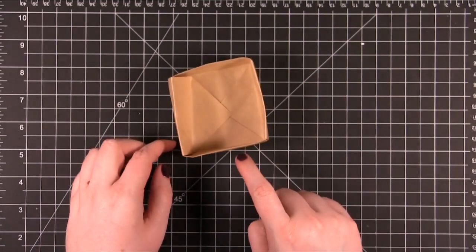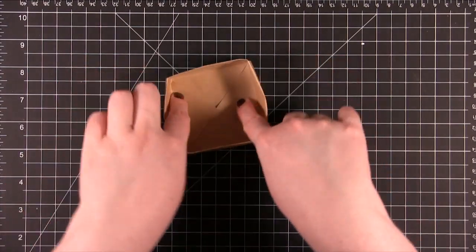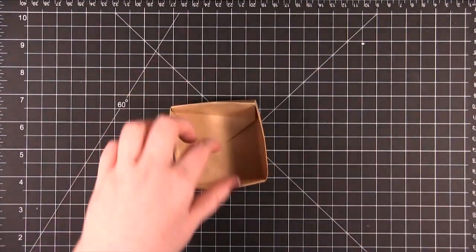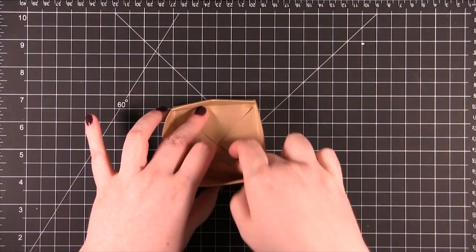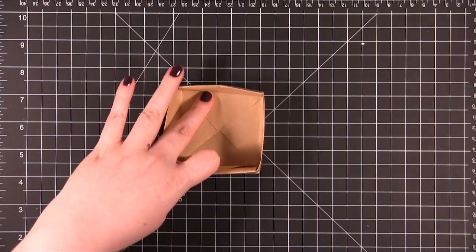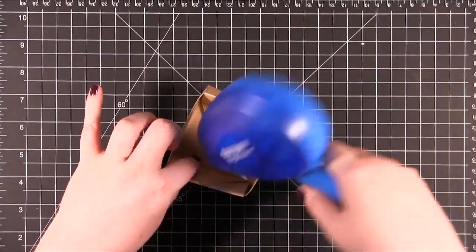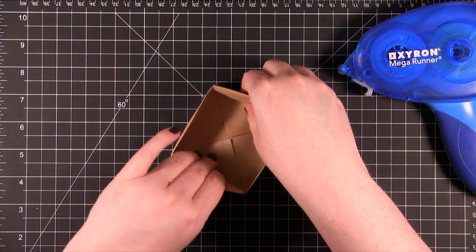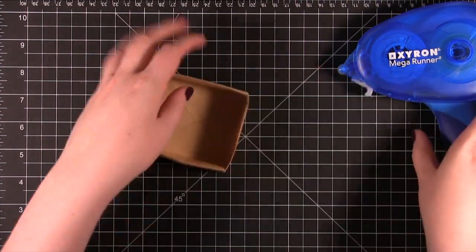And then you're going to take a little bit of adhesive or a little bit of tape and just get these corners to stay inside. I'm just going to lift the little bottoms there. Put a little bit of adhesive down. And then it's not going to budge.